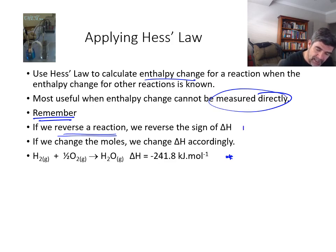So if we were to take the first of these and say, what happens if we reverse the reaction? Then we have to reverse the delta H sign. So that's fairly easy. If we underneath write the reverse of this, water gas producing hydrogen gas and half a mole of oxygen gas would then have a delta H value of plus 241.8 kilojoules per mole.